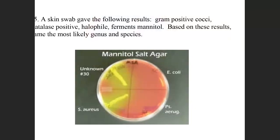A skin swab gave the following results: gram-positive coccus, catalase positive, halophile — meaning it loves salt — and it ferments mannitol. Based on that, what's a likely genus and species? Staphylococcus aureus.